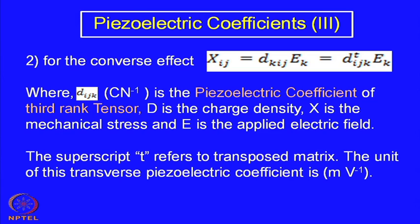The unit of d_ijk is coulombs per newton — it is the piezoelectric coefficient of the third-rank tensor. D is the charge density or flux density, X is the mechanical stress, and E is the applied electric field. The superscript t refers to the transpose matrix of d_ijk, so d_ijk transposed becomes d_kij. The unit of this transverse piezoelectric coefficient is meters per volt, representing the extension as a function of applied voltage.